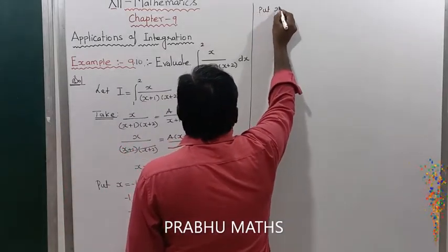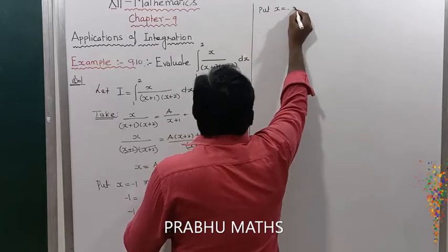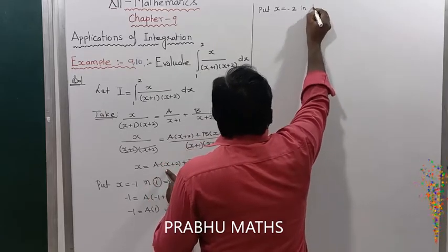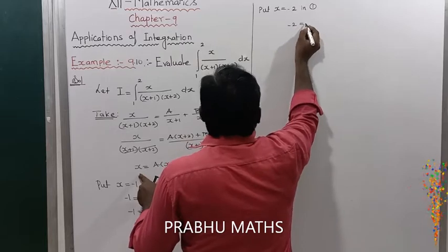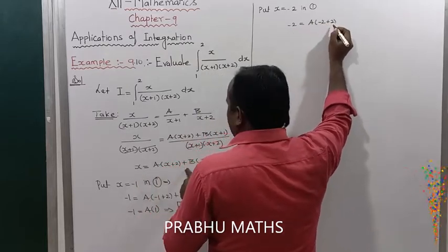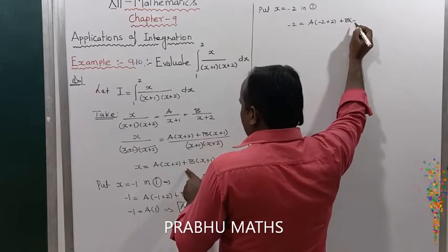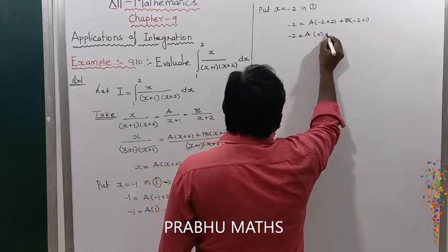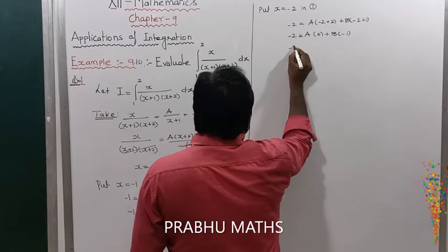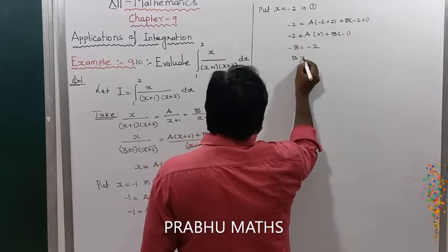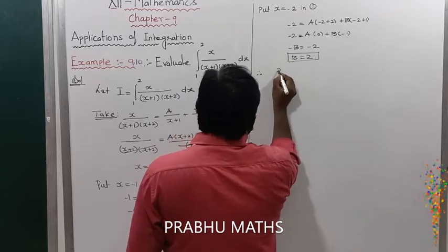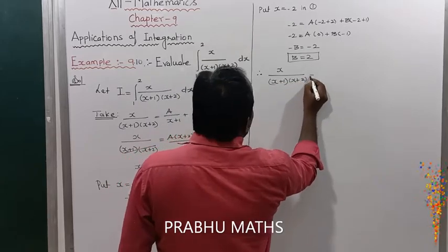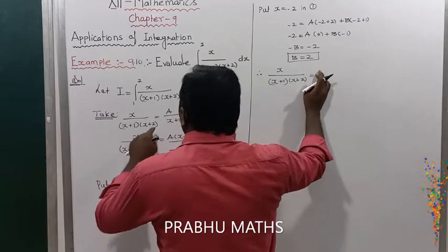Next, to find B, put x = -2 in equation number 1. We get -2 = A(-2+2) + B(-2+1), so -2 = A(0) + B(-1), which gives -B = -2, therefore B = 2. So x/((x+1)(x+2)) = -1/(x+1) + 2/(x+2).